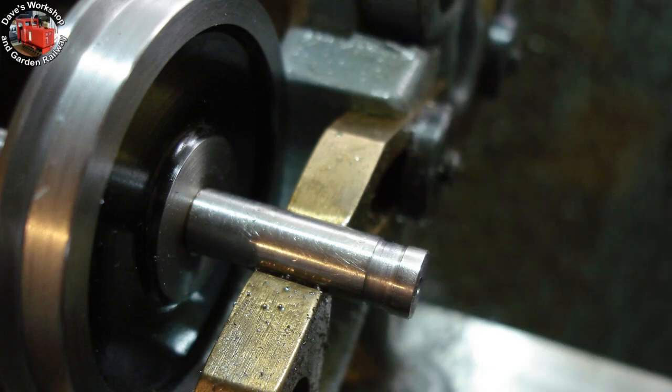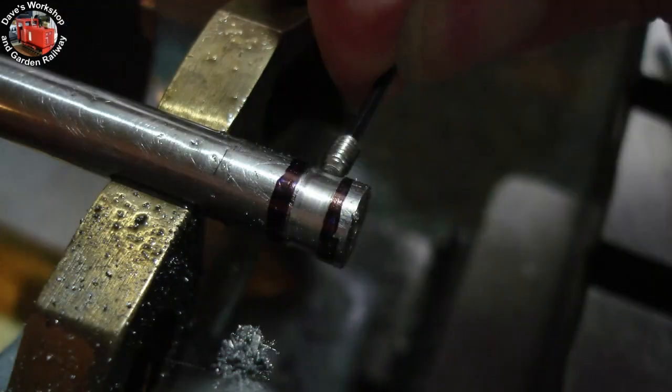Here's the undercut, 10 thou or quarter of a mil deep and wide enough for the M3 grub screws. Offering up a grub screw. Sorry about the long thumbnail.